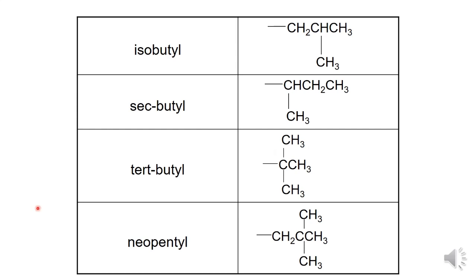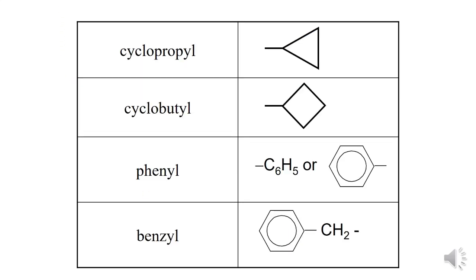The structures of substituent groups with 4 carbons are called isobutyl, sec-butyl, and tert-butyl. The substituent group with a cyclic structure is called cyclopropyl.